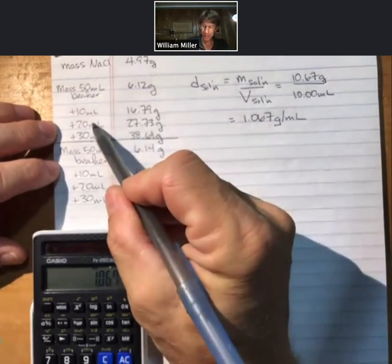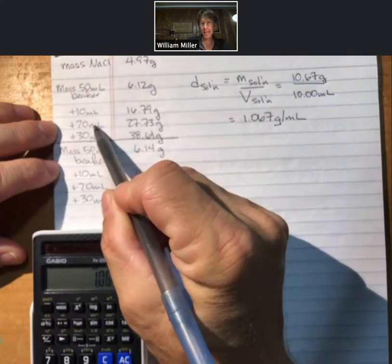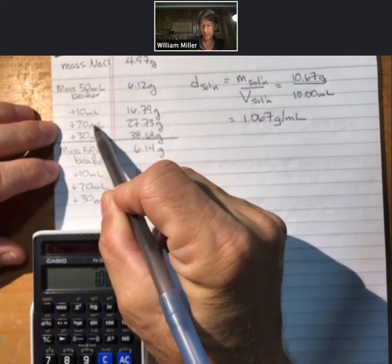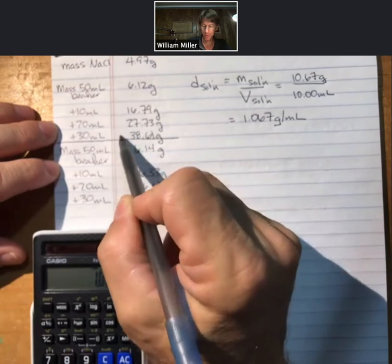Again, each time our volume will be 10.00 milliliters and we'll subtract off from the previous amount.